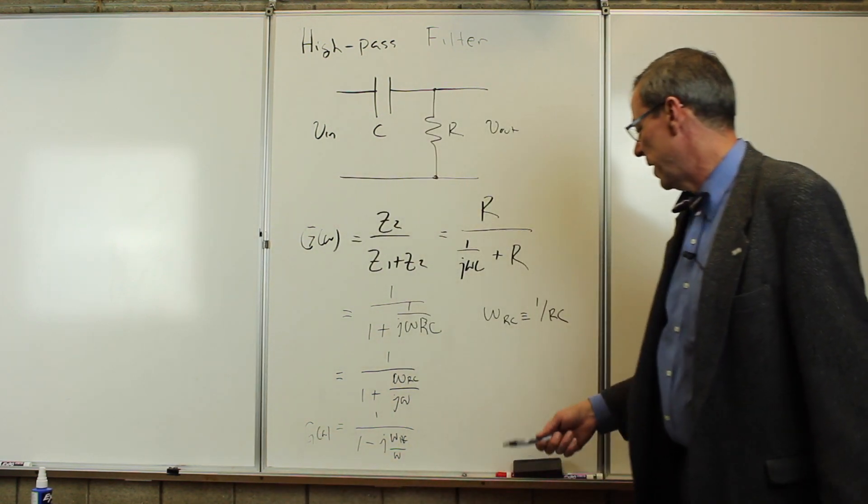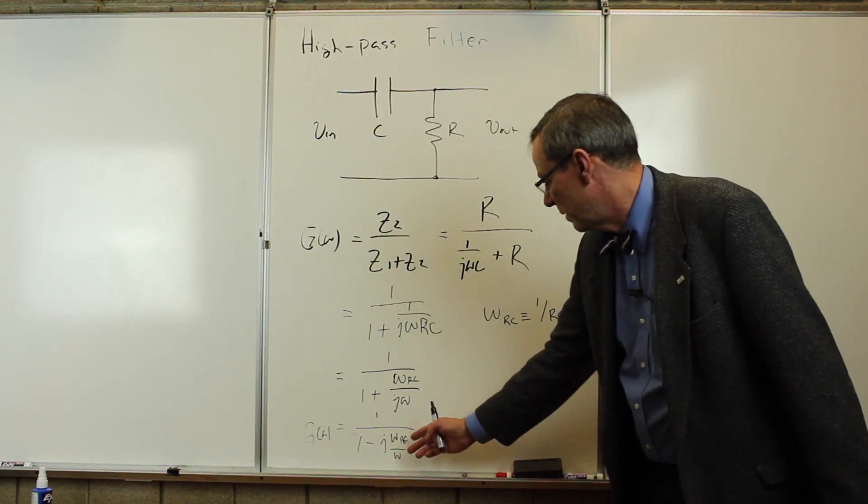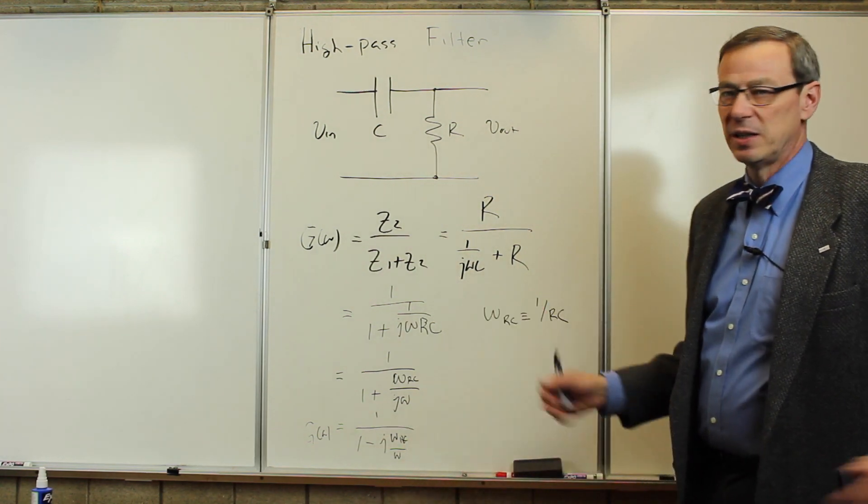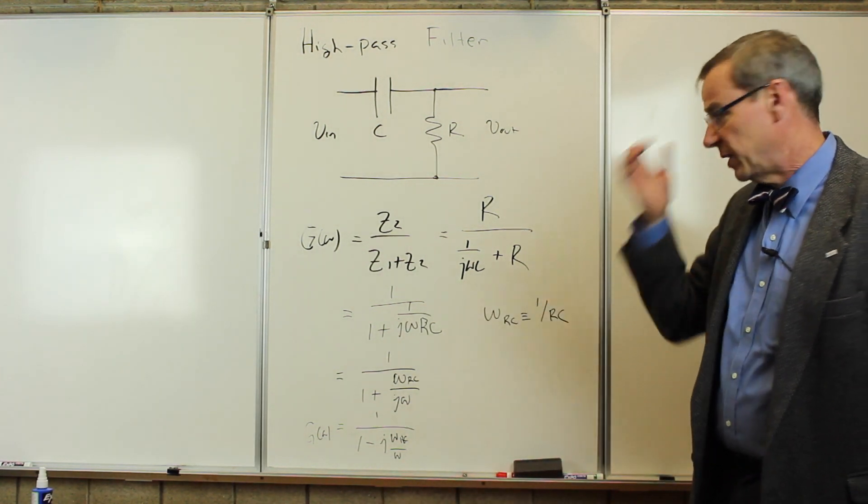That looks very similar to the low-pass filter gain except the omega and the omega RC are flipped, and we have a minus sign there. So let's take a look at what that does.